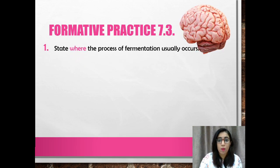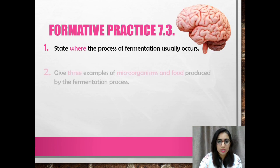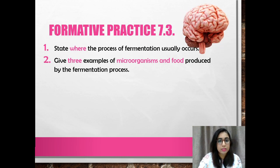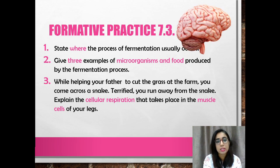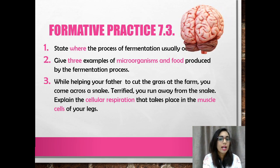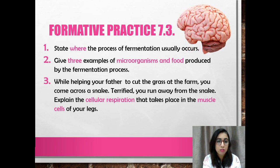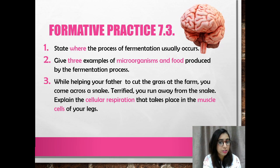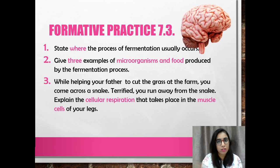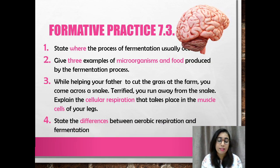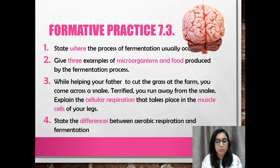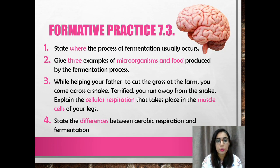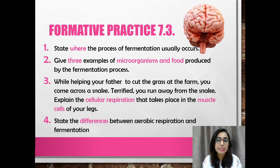The formative practice questions are: firstly, state where the process of fermentation usually occurs; give three examples of microorganisms and food produced by fermentation; and the third question — while helping your father cut grass at the farm, you come across a snake and run away terrified. Explain the cellular respiration that takes place in the muscle cells of your leg. Lastly, state the differences between aerobic respiration and fermentation.